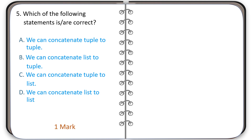The correct options for question five are A and D. We can concatenate a tuple to a tuple and a list to a list, but we cannot concatenate a list to a tuple, and we cannot concatenate a tuple to a list.